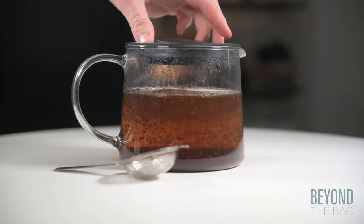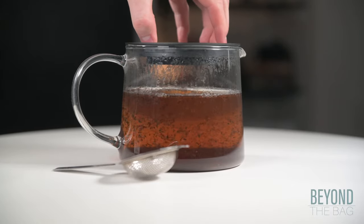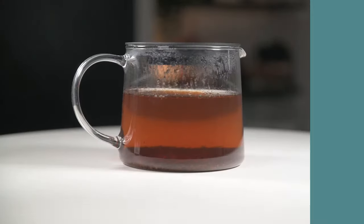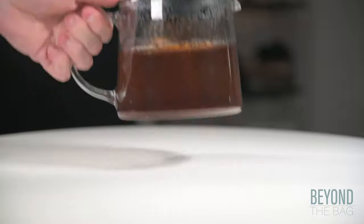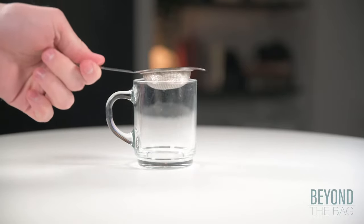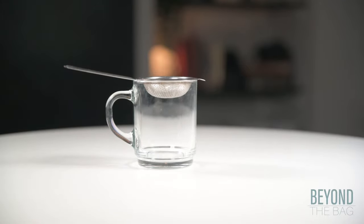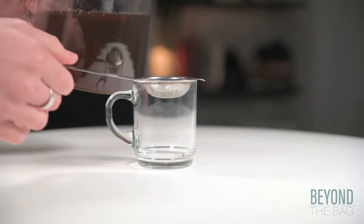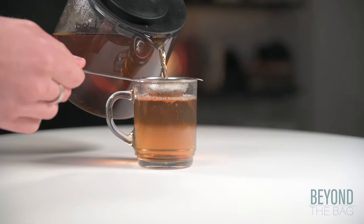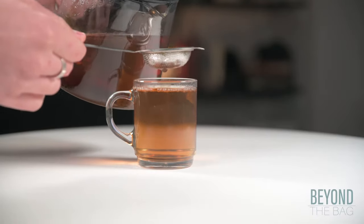And again, thanks to the magic of editing, we are going to jump ahead a few minutes to once the tea has finished steeping. Now to serve, take your mug or teacup and place the tea strainer on top. Simply pour the tea through the strainer into the cup. The leaves get caught in the strainer and the tasty tea passes right on through.